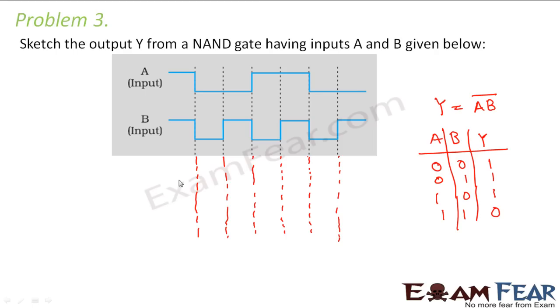So if you see here for the first time interval this is 1, this is 1, this is also high, this is also high. So high, high will make the output low. Now in the second segment both are low. So when both are low it will make the output high. In the third segment one is low and the other one is high. So it will again make it high.